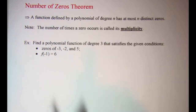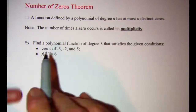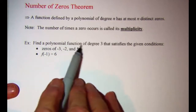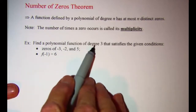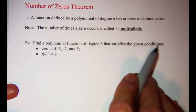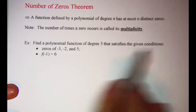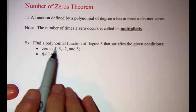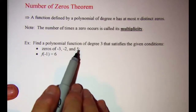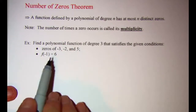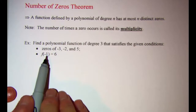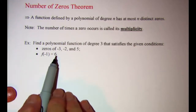Our first example: we're asked to find a polynomial function of degree 3 that satisfies the given conditions. I want zeros of negative 3, negative 2, and 5, and I'm also told that f of negative 1 is equal to 6.